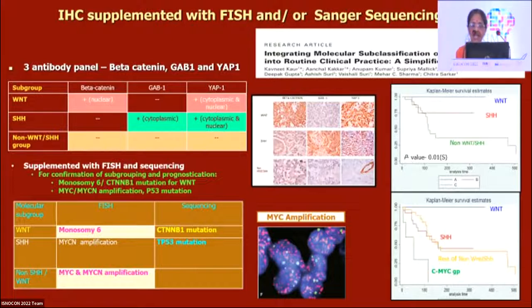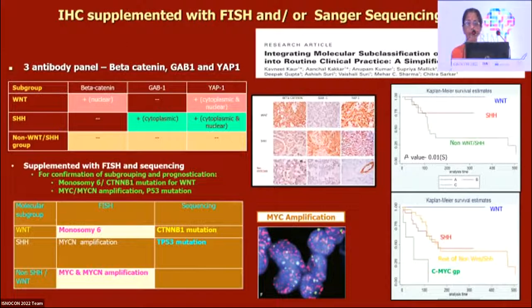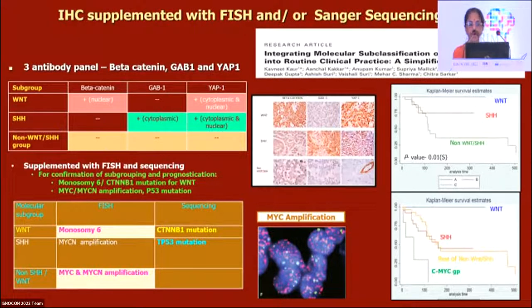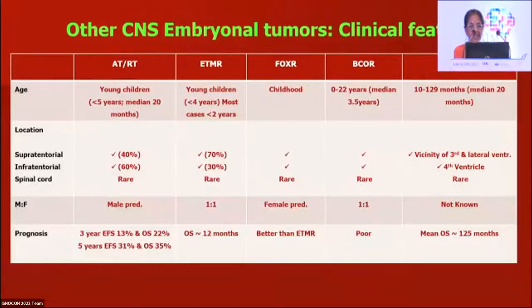In medulloblastomas, IHC for p53 is not positive in all cases — you need to look for diffuse immunopositivity, which sometimes does not correlate with mutational status. Therefore, do p53 IHC alongside beta-catenin, GAB1, and YAP1 only if you see desmoplastic/nodular or large cell anaplastic morphology, and corroborate with p53 mutation studies. In summary, for medulloblastoma: IHC supplemented with FISH and/or Sanger sequencing for these markers is the best practical approach depending on resources.